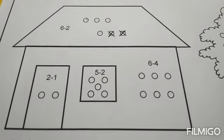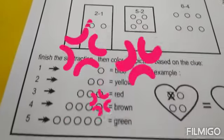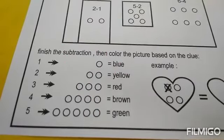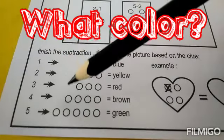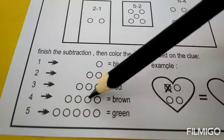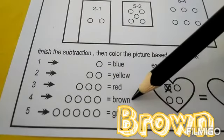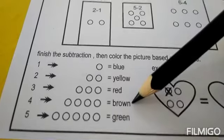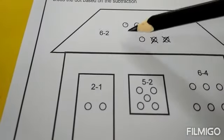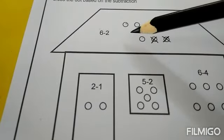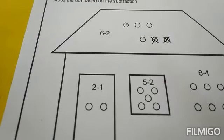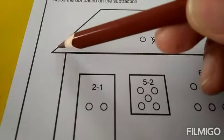The answer is four. Let's find four dots: one, two, three, four. Look at this - what color is it? It's brown, so we have to color the roof with brown. Let's color.